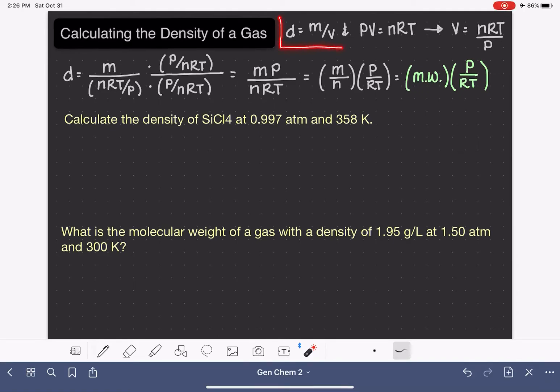The density of any substance is calculated by this equation: density equals mass over volume. This is also true for gases.